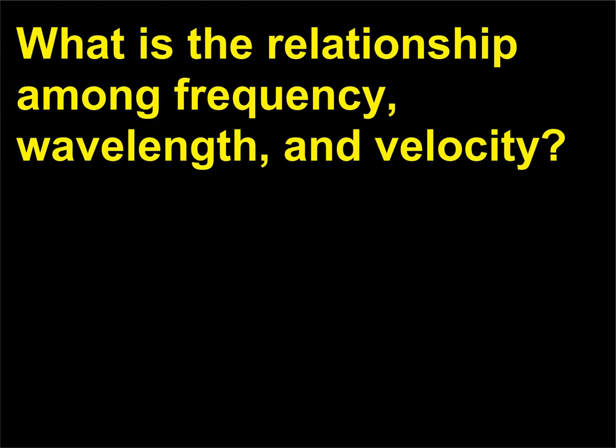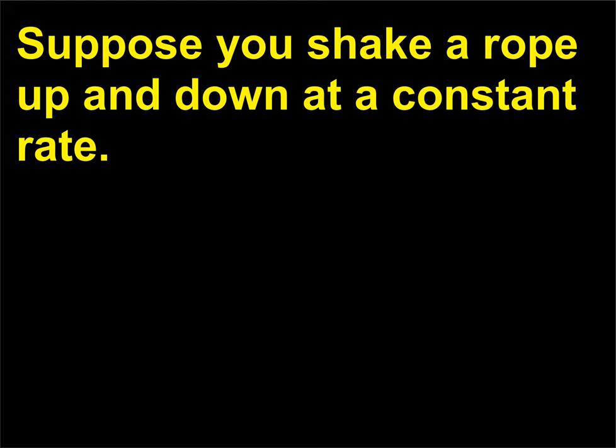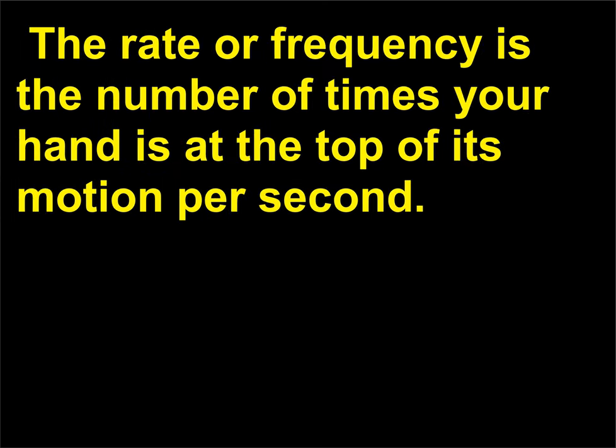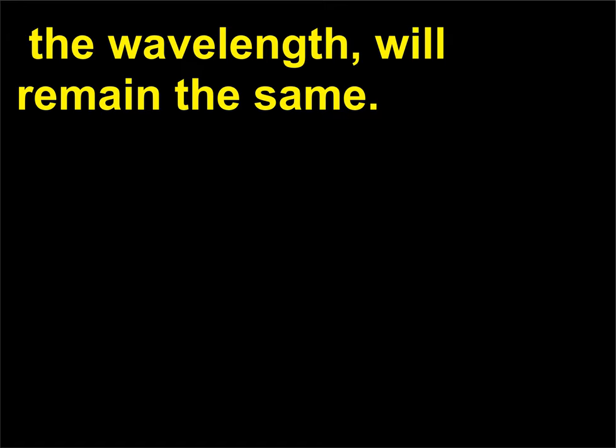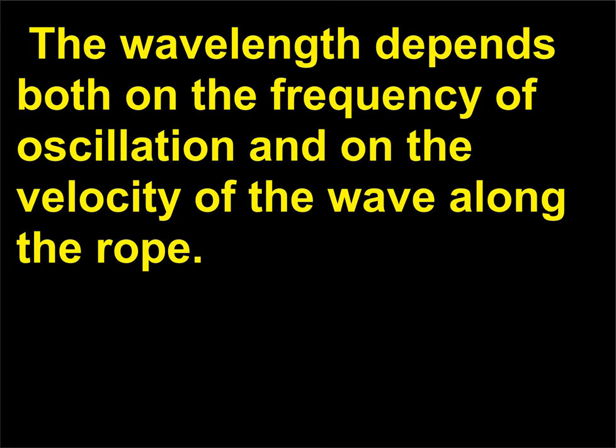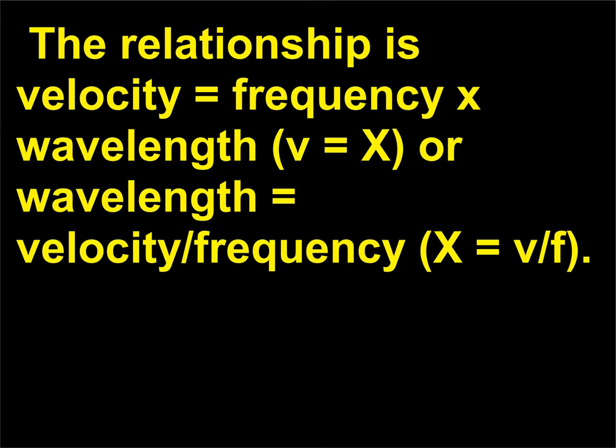What is the relationship among frequency, wavelength, and velocity? Suppose you shake a rope up and down at a constant rate. The rate or frequency is the number of times your hand is at the top of its motion per second. As the waves move along the rope, the distance between the crests of the rope, the wavelength, will remain the same. The wavelength depends both on the frequency of oscillation and on the velocity of the wave along the rope. The relationship is velocity equals frequency times wavelength, v equals lambda f, or wavelength equals velocity slash frequency, lambda equals v slash f.